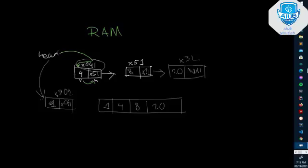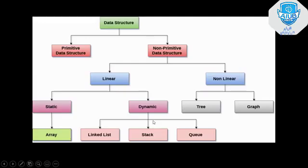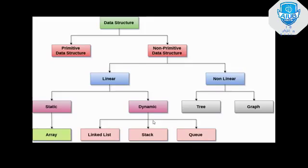Another concept in data structures is the classification into primitive and non-primitive data structures. Primitive data structures include integer, float, char, and array. Non-primitive data structures are further divided into linear — such as array, stack, and queue — and non-linear types like tree and graph, as well as static types like arrays and dynamic types like linked lists.